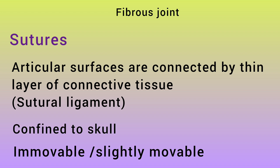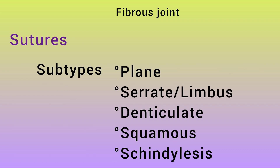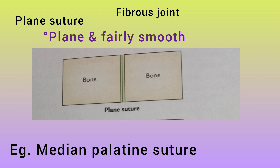Sutures are connected by thin layers of fibrous connective tissue, forming a joint in the skull. For growing children there is some movement, but they are largely immobile. The types of sutures are: plain suture — where the articular surface and margin are smooth and flat; the second type is also plain in nature.